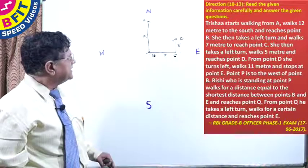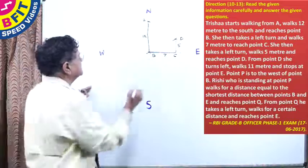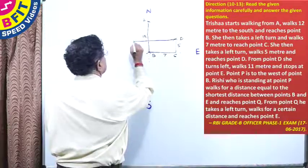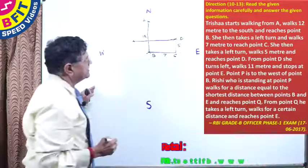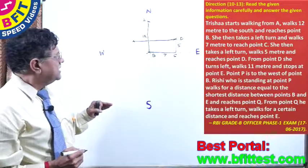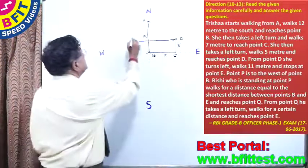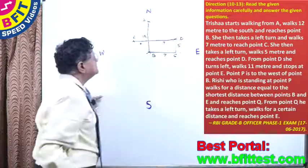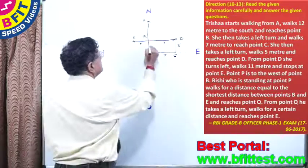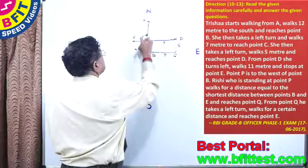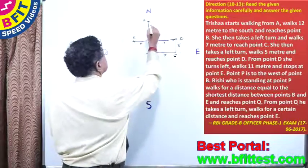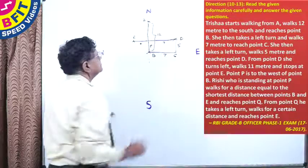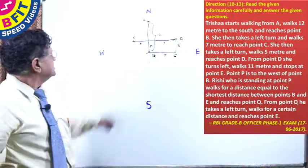From point D, she turns left and walks 11 meters, stopping at point E. So the measurements are: this segment is 4, this is 7, and this is 5, and this whole vertical distance is 12 meters.